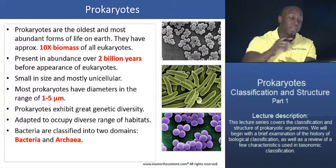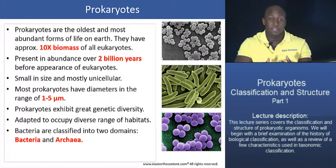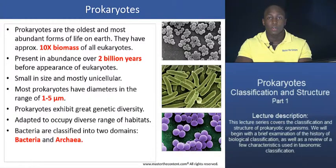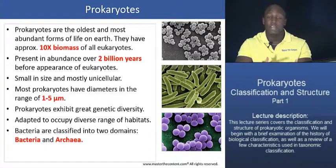Prokaryotes happen to be the oldest, simplest, and most abundant forms of life on Earth. They have approximately ten times the biomass of all eukaryotes on this planet — so you can imagine microorganisms having roughly ten times the biomass of every other organism on Earth.